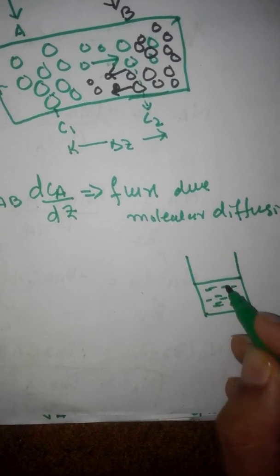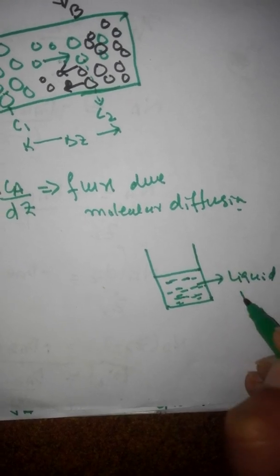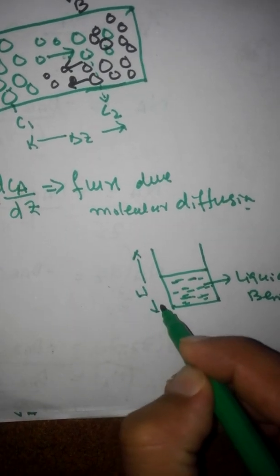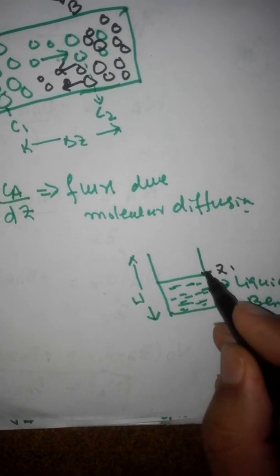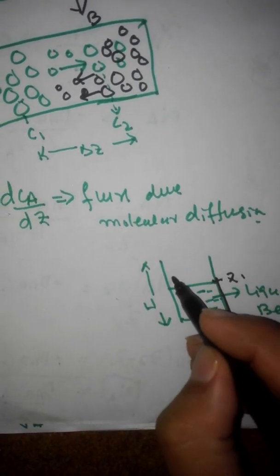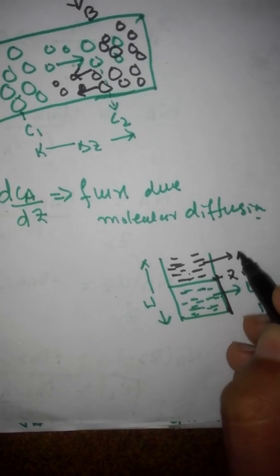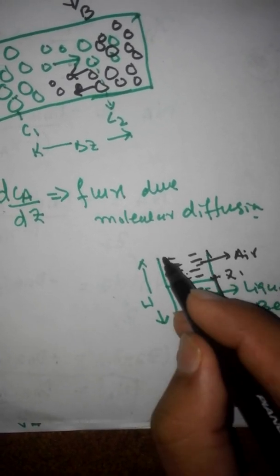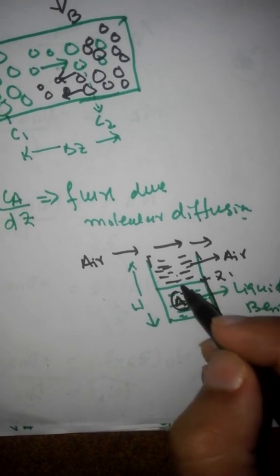For the convective flux, consider a beaker with liquid benzene at the bottom. The liquid level is at height Z1. On this side there is air, and there is a gas B which is stationary. Air is also flowing around the beaker.